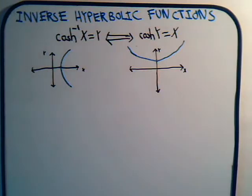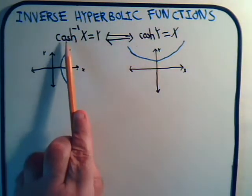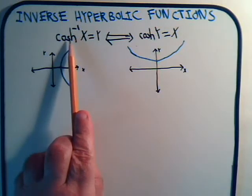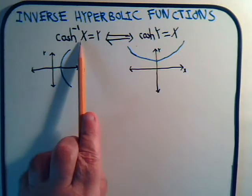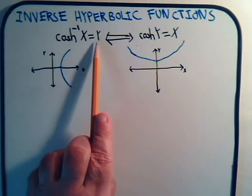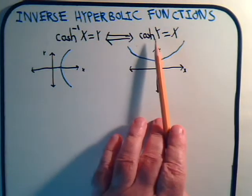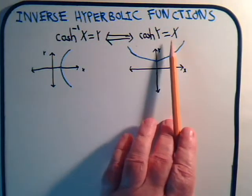We're going to spend a couple of minutes talking about the inverse hyperbolic cosine function. If we're concerned with this function here, the inverse hyperbolic cosine of x, and that's equal to some variable y, then that's the same thing as saying that the hyperbolic cosine of y equals x.